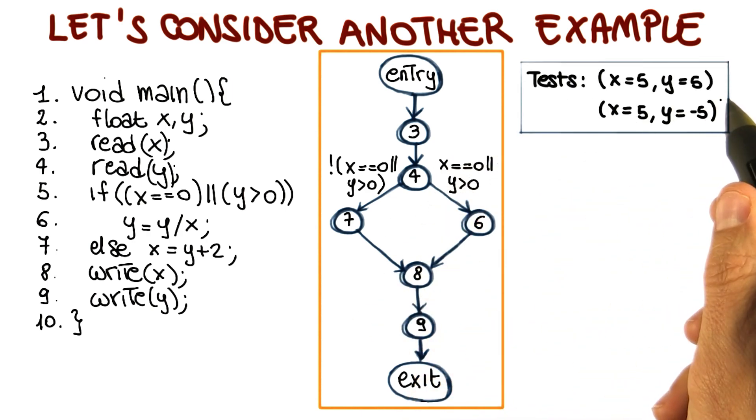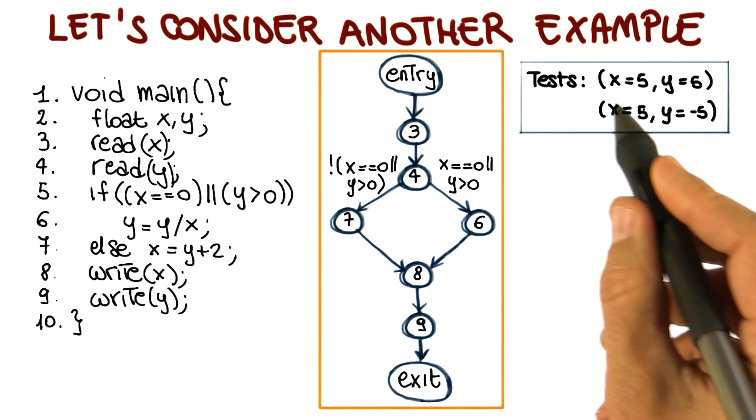Let's assume that we have two tests for this code that are shown here. For the first one, the inputs are 5 and 5. For the second one, 5 and minus 5.